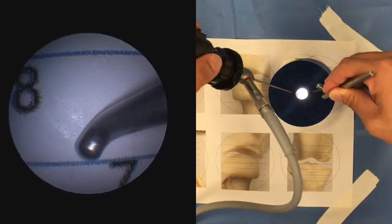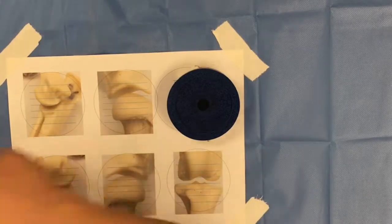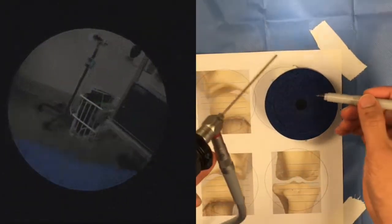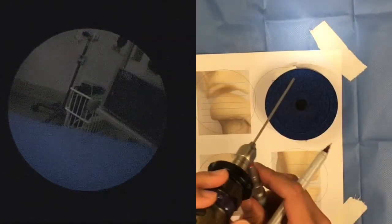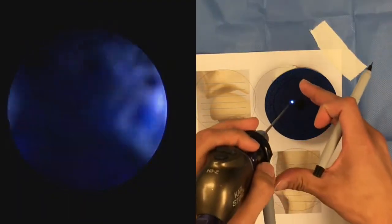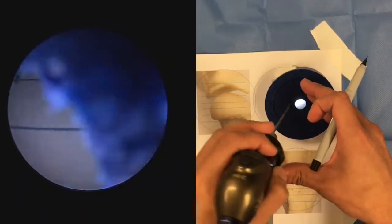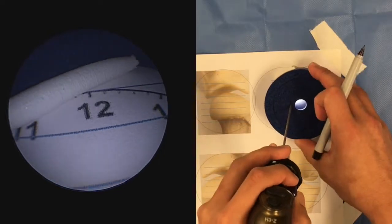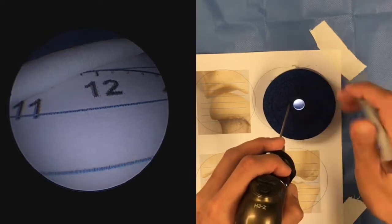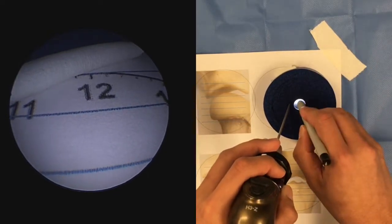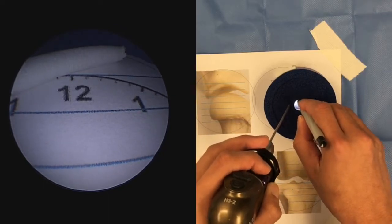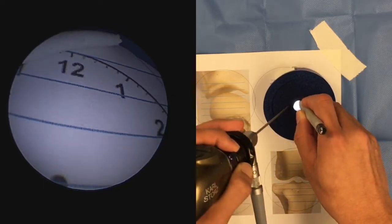To continue to help develop triangulation skills, we're now going to attempt to draw a star. We're going to connect some of these numbers to draw a five-pointed star with a sharpie marker that's going to be introduced through the larger hole in the center. Do this with both left and right hands.